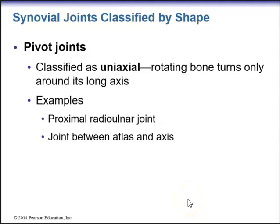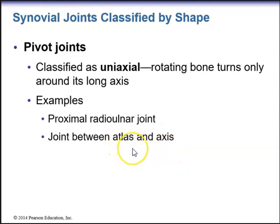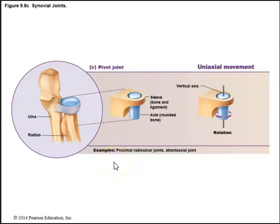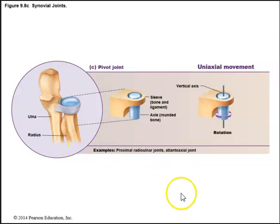Pivot joints are also uniaxial — the rotating bone turns only around its long axis. Examples include the proximal radio-ulnar joint and the joint between C1 and C2 (the atlas and axis), which allows rotation of the head. A ligament surrounds the head of the radius, enabling that uniaxial rotation. The atlanto-axial joint is another example.